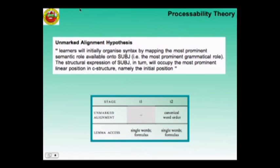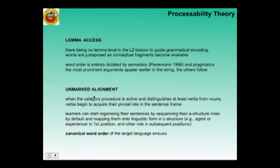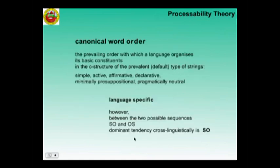When learners can at least distinguish nouns from verbs, having reached the category procedure on the old PT schedule, the verb begins to have its crucial role in the sentence frame. Learners organize their sentences by sequencing their A roles by default and mapping them onto the linguistic structure. Canonical word order ensues in the target language. Canonical word order is the prevailing order with which a language organizes the basic constituents of its prevalent default type of string.